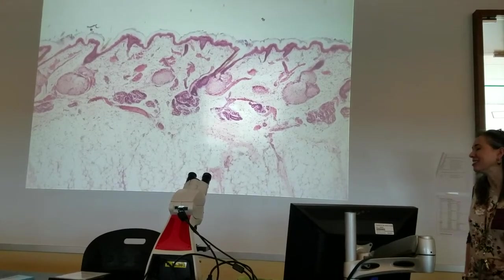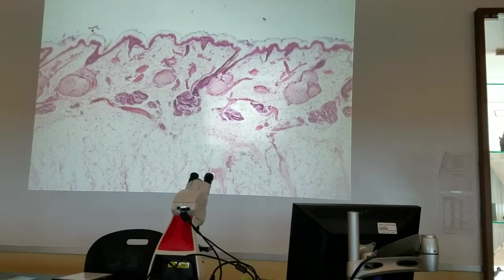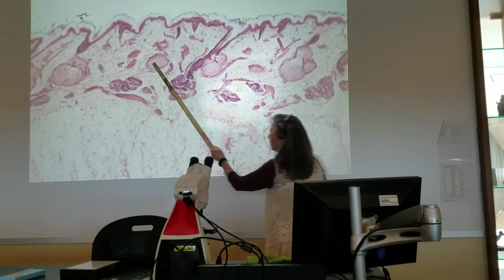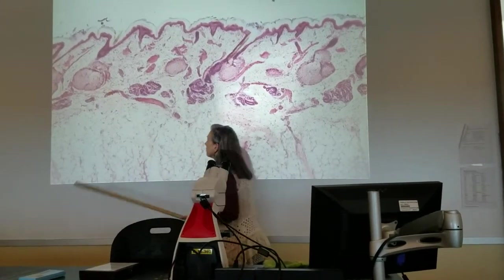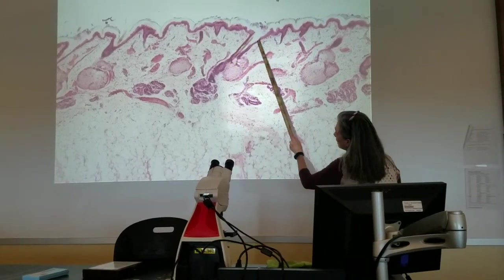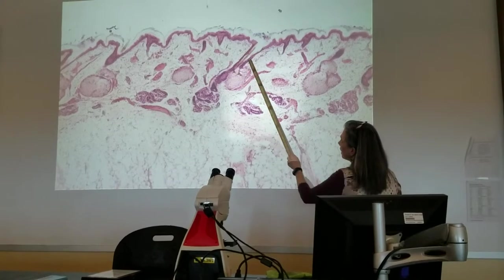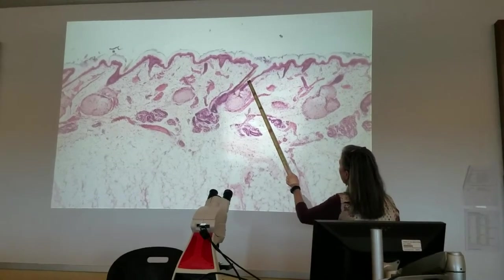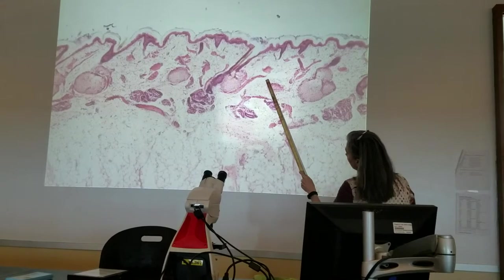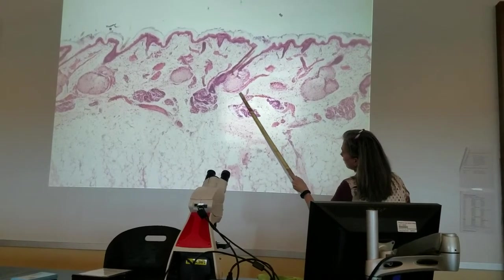It is a sweat gland. Eccrine sweat glands - so they are sweat glands. What are these big guys right here? Those are oil glands, correct. What is this whole structure right here? That is a hair follicle. What's inside of my hair follicle? A hair shaft. And then I've got these little tiny guys right here that are going to be associated with my hair follicles.